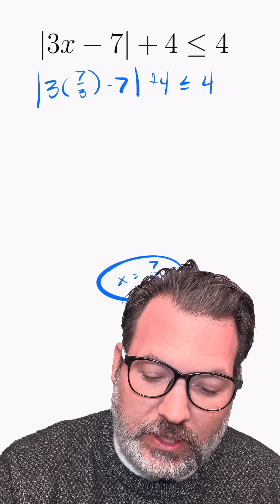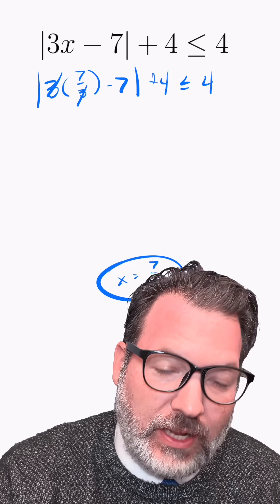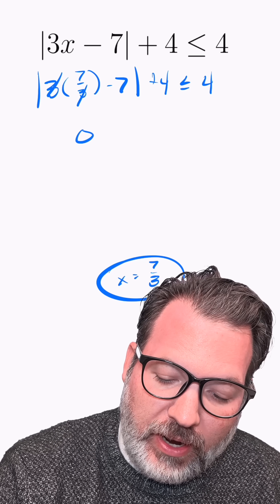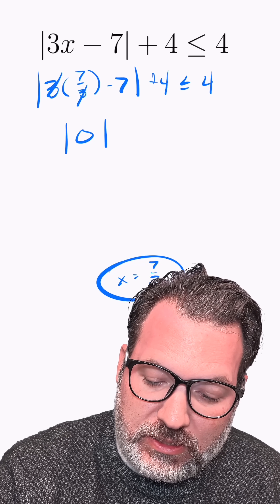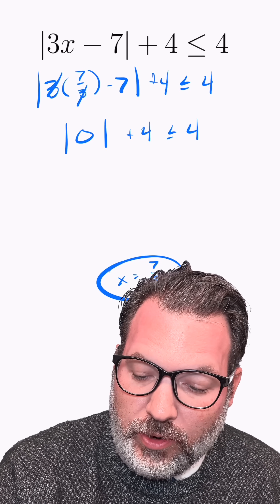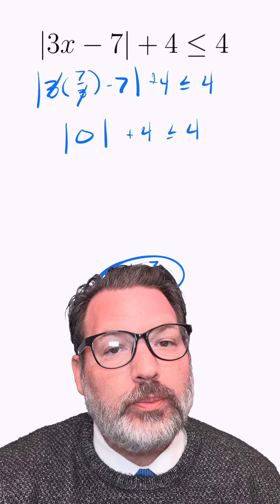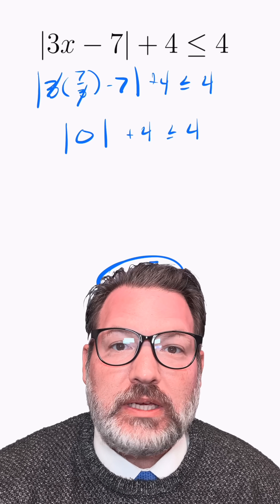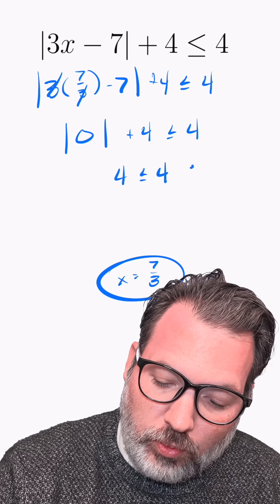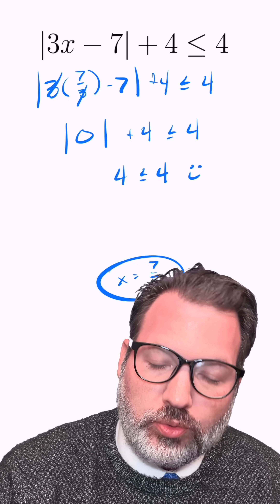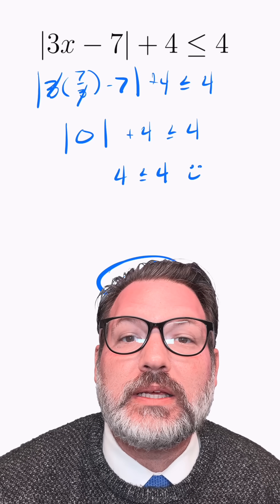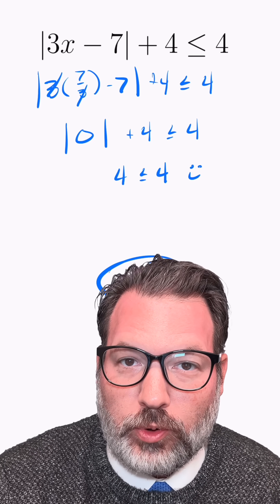3 times 7 thirds is 7 — that's the whole point of having the 3 in the denominator. 7 minus 7 is 0, and the absolute value of 0 is 0. So what we end up with is 0 plus 4 is less than or equal to 4, which is true — 4 is less than or equal to 4 because it is equal to 4.